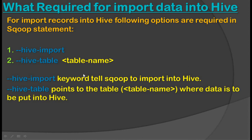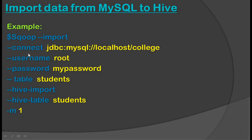Let's see an example. We write the Sqoop statement as: sqoop import, then the connection string, then the RDBMS table name from where we want to import data, followed by --hive-import and --hive-table with the Hive table name where we want to store the data. After that we specify -m 1, meaning how many mappers should run.